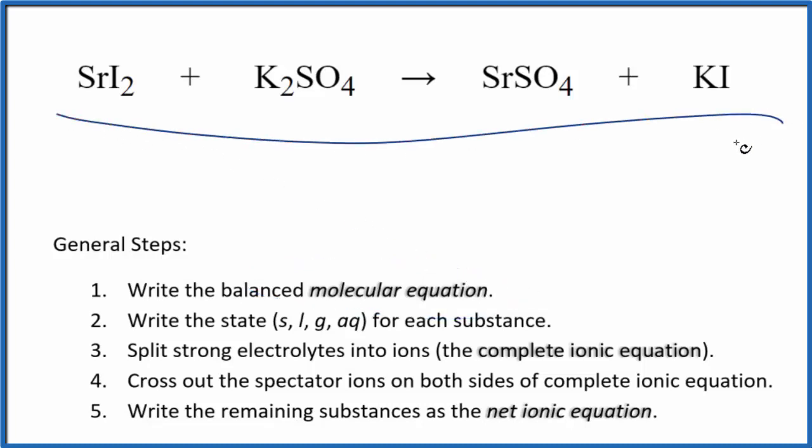This is the molecular equation. I can see right away I have two iodine atoms here and one here, and then two potassium and just one here. So it looks like all I need to do to balance this equation is put a 2 in front of the KI, the potassium iodide. So this is the balanced molecular equation.